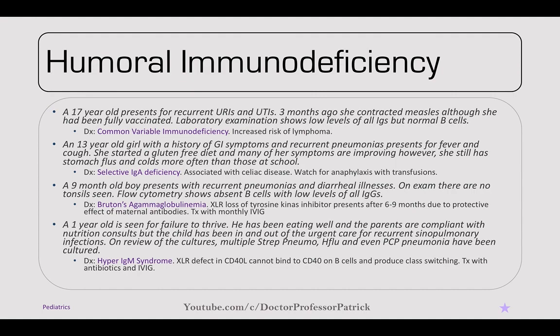A one-year-old is seen for failure to thrive. The child has been in and out of urgent care for recurrent sinopulmonary infections. Cultures show multiple strep pneumo, H. flu, and PCP pneumonias. This is hyper-IgM syndrome — an X-linked recessive defect in CD40 ligand, which can't bind to CD40 on B cells to produce class switching. Treatment is antibiotics and IVIG.